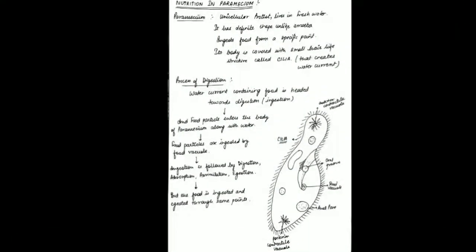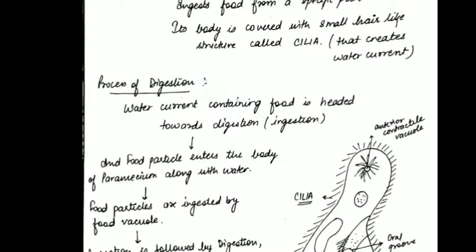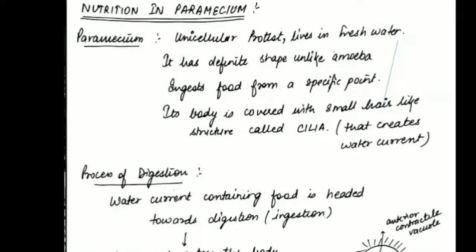Continuing with the other lower organism, paramecium. In the previous slide we studied amoeba. Amoeba is very important from an exam point of view — the definition of pseudopodia, the definition of phagocytosis, and the diagrammatic representation of how amoeba engulfs food by forming pseudopodia, food vacuole, and contractile vacuole. The whole process will mostly come as a long question, so please prepare nutrition in amoeba well.